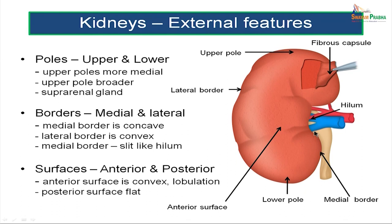The hilum is the place where structures enter and leave the kidney. The hilum is occupied antero-posteriorly by the renal vein in front, behind which is the renal artery, and further posteriorly is the ureter. Each kidney shows two surfaces: an anterior surface, which is convex, and the posterior surface, which is relatively flat. The anterior surface shows a certain amount of lobulation, which is a remnant from the fetal lobulated kidney.